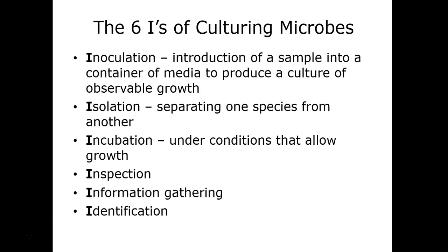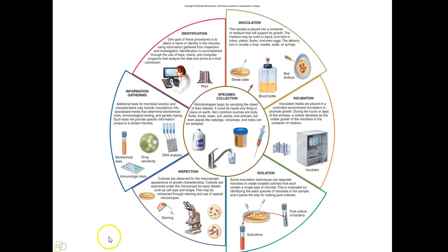Once we grow the microbes, we inspect them, noting their color, size, and texture. We then use a manual — almost like an encyclopedia — called Bergey's Manual of Systematic Microbiology, a four-to-six part series listing all known bacterial species and their traits. We can use it like a dichotomous key, answering yes/no questions to narrow down the possible identification of the unknown microbe.